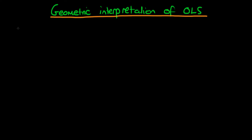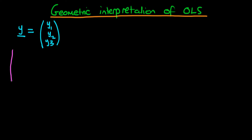If we imagine we have a vector of our dependent variable observations — let's say we have three observations of our dependent variable, y1, y2, and y3 — we can imagine these three different observations as perhaps representing different values of y for different individuals. Because we've written this as a vector, we could think about drawing this as a vector in three-dimensional space.